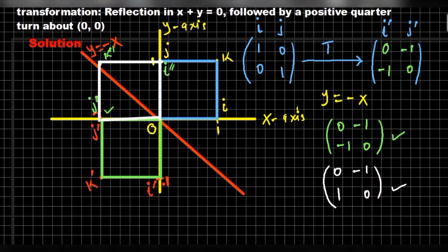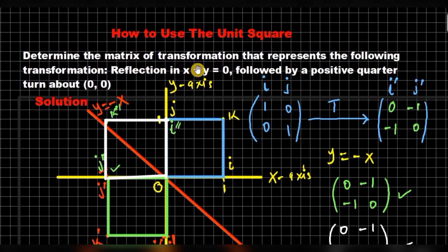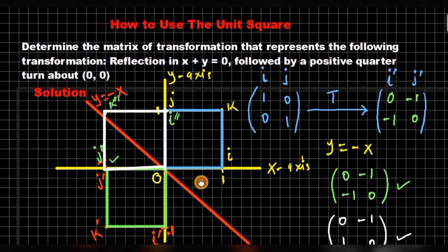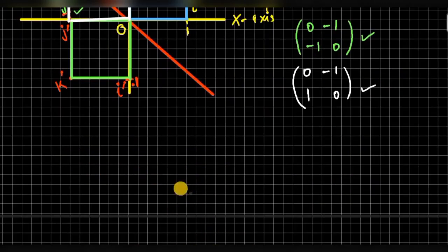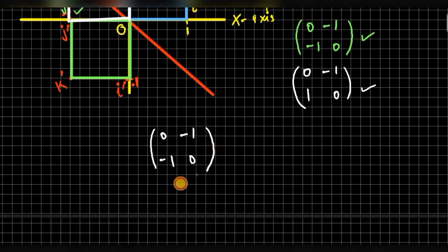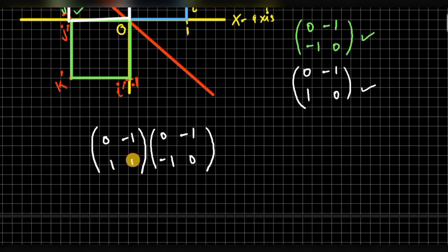We have reflection in x plus y equals 0, followed by a positive quarter turn about the origin. For such successive transformations, the first transformation matrix will be on the right-hand side: (0, -1; -1, 0) for reflection on line x plus y equals 0. The second transformation matrix will be on the left-hand side: (0, -1; 1, 0). When we multiply, we will get a single transformation matrix representing the entire transformation.